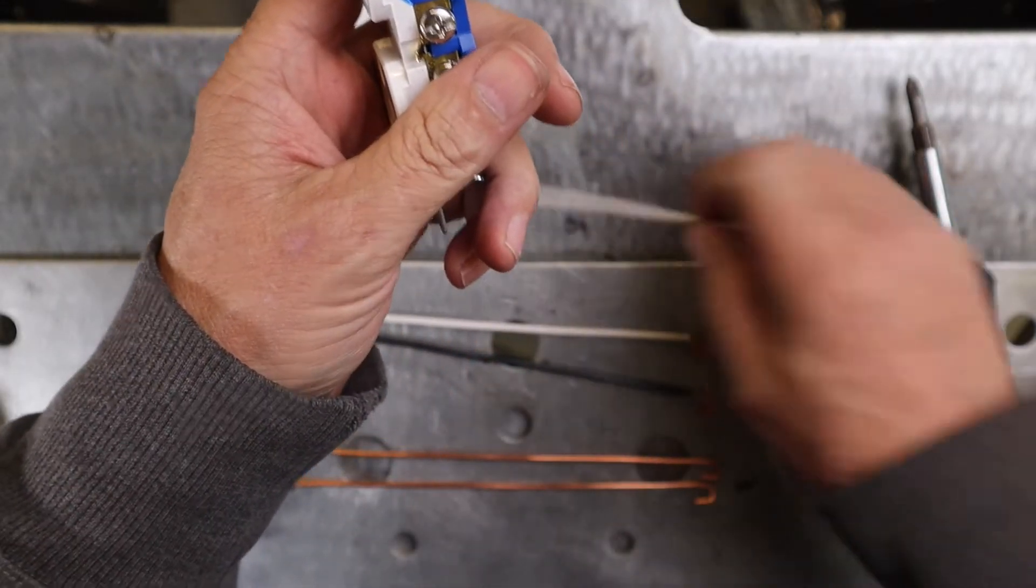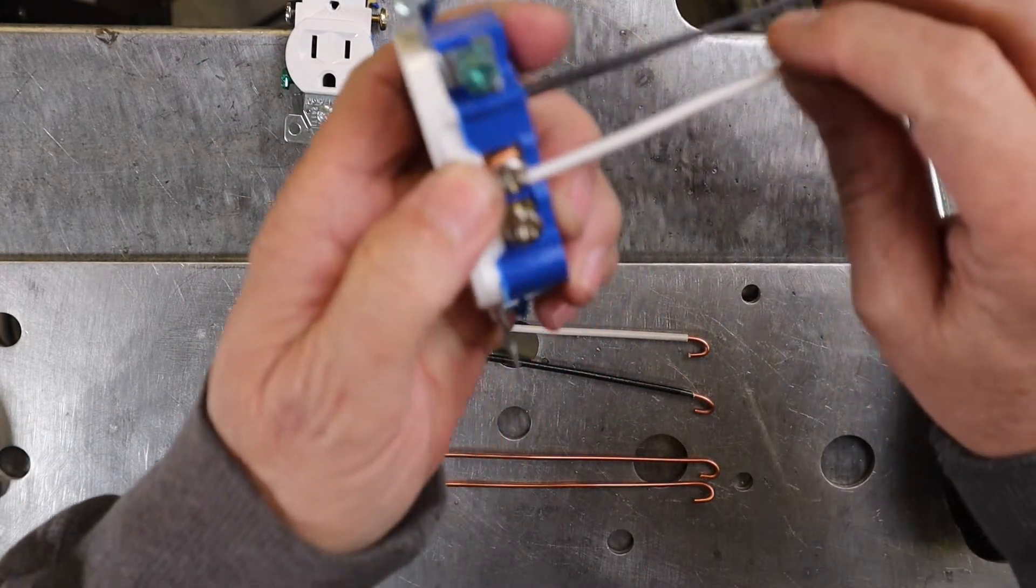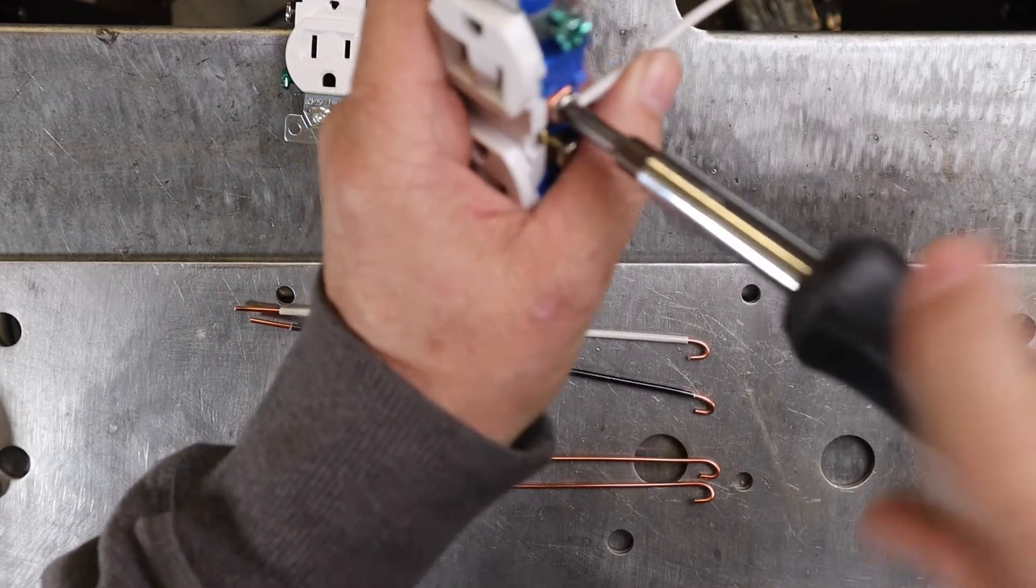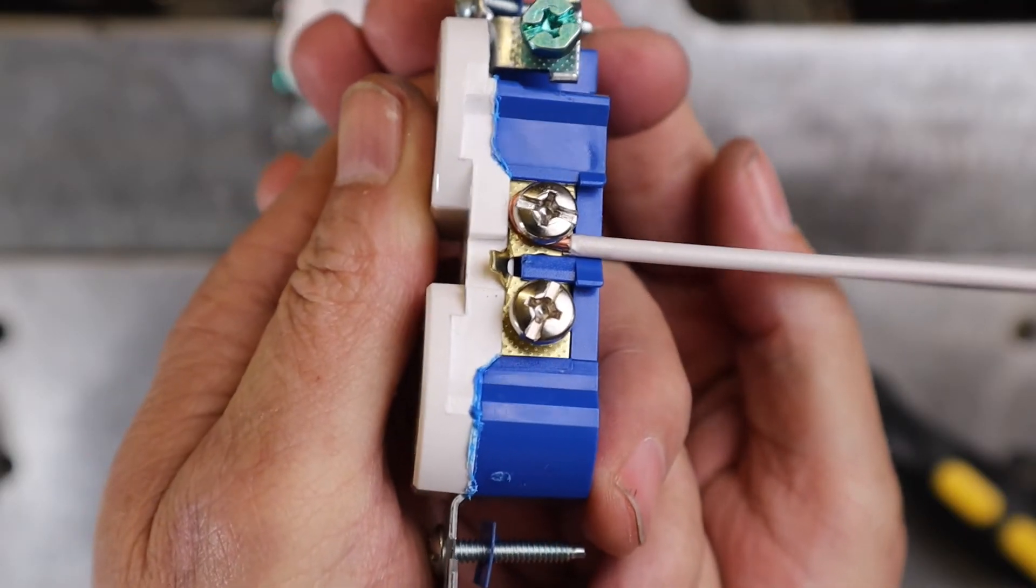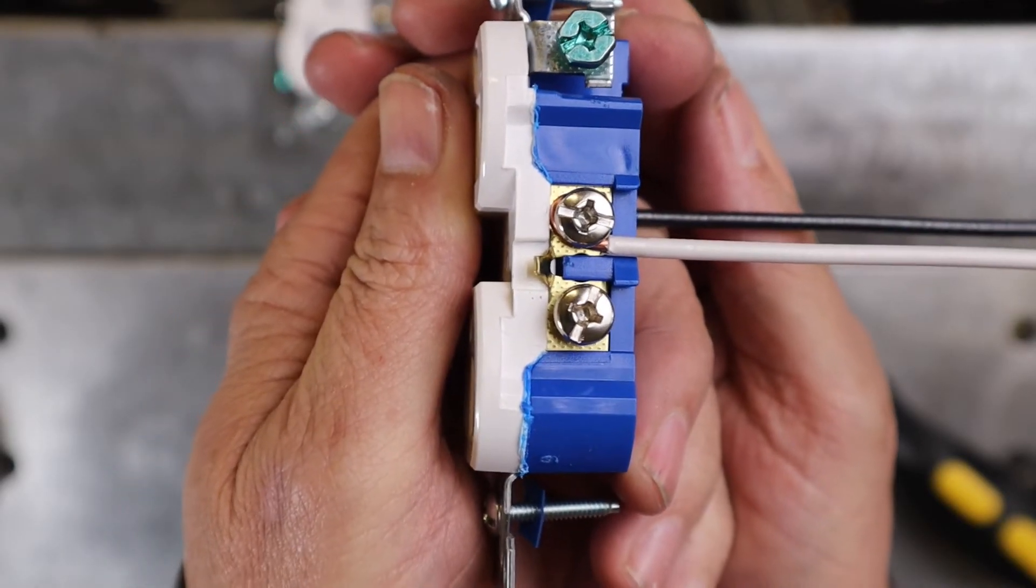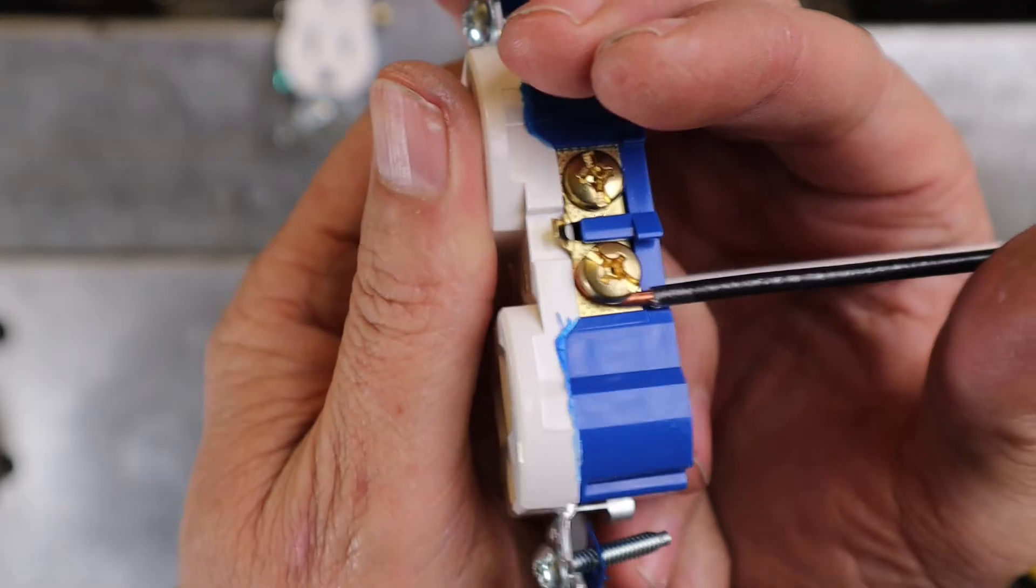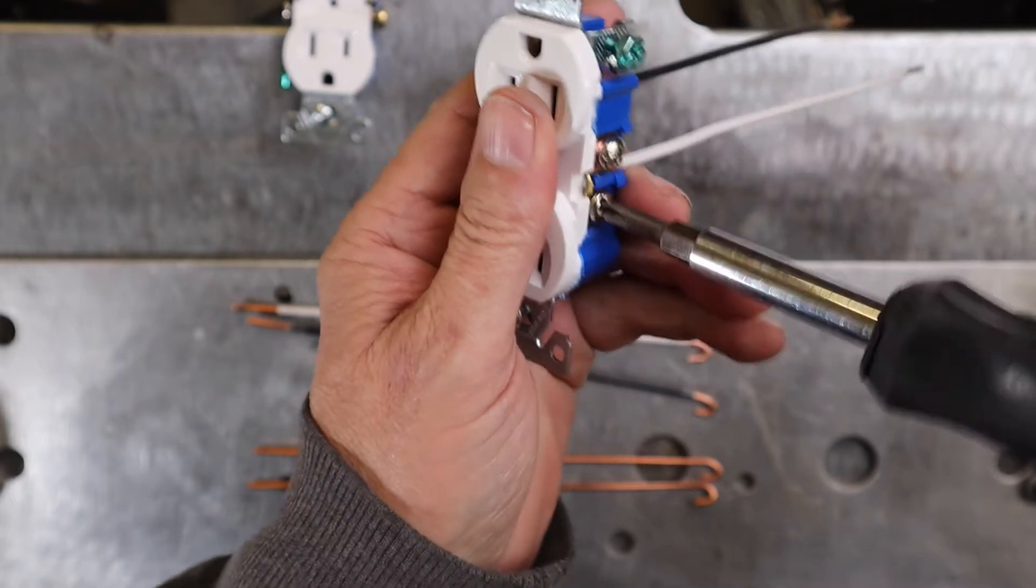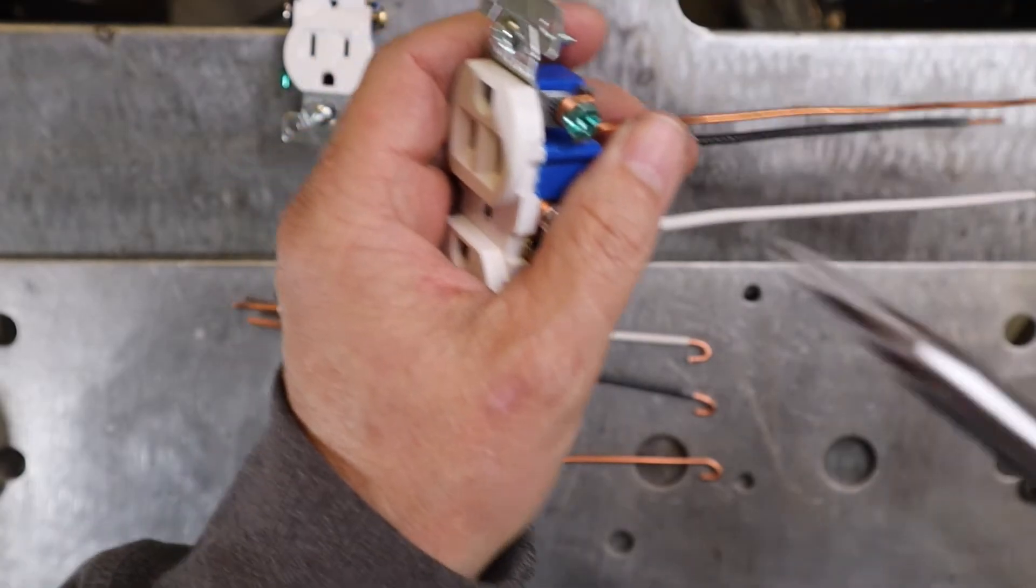Do the same thing for the neutral on the silver screw. See how that insulation is not underneath the screw? The screw is only touching on the copper wire, so that's how you want your strip to look once it's underneath the screw. Otherwise you could get a hot spot and cause you problems. Same thing with the hook going the same direction that the screw goes.